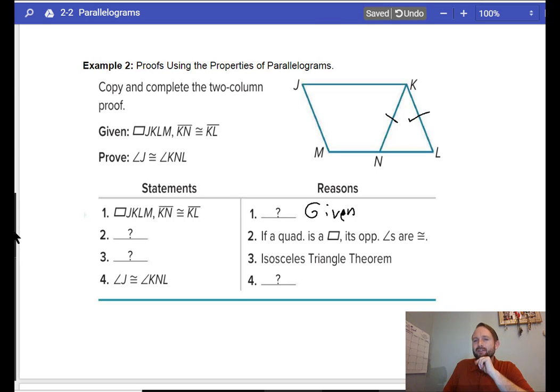Next up. If a quadrilateral is parallel, then the opposite angles are congruent. Well, since I'm talking about this triangle right here, I'd probably say angle L is congruent to angle J. Angle L congruent to angle J. Because the opposite angles are congruent.